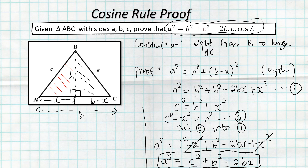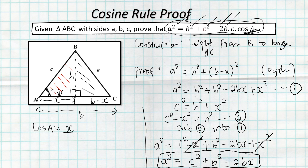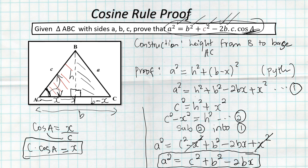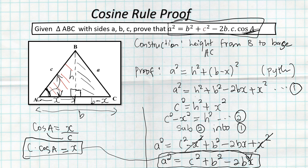Now solve for x using trig ratios in right-angle triangle ABD: cos A = adjacent/hypotenuse = x/c, so x = c cos A. Substituting into equation three: a² = b² + c² − 2b(c cos A) = b² + c² − 2bc cos A. The cosine rule is proven.